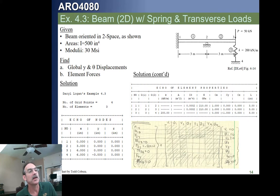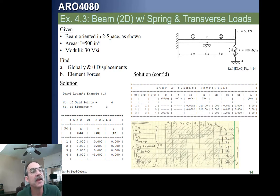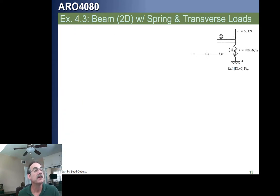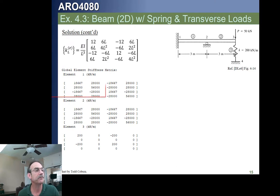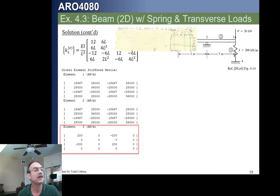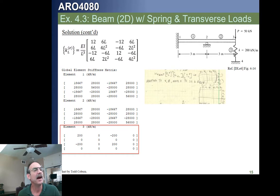Here's another example: two beam elements and one spring element — a two-dimensional problem. We have nodes and beams. When constructing our global stiffness matrix, we eliminate vertical displacement and rotation at node 1 (wall), vertical displacement at node 2 (pin), node 3 is completely free, and node 4 is completely fixed. The local stiffness matrix for each beam element is the standard bending matrix. For the spring element, we apply a transformation to convert to the proper coordinate system.